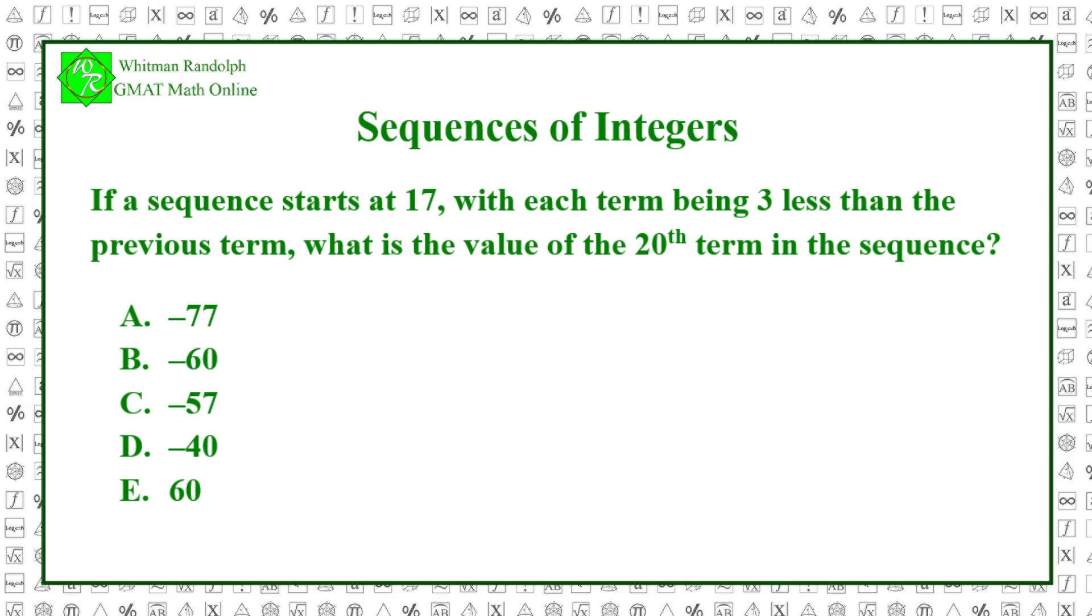Let's find the solution. Since we start at 17, the first term is 17. The second term is 3 less, so it's 14, and the third term is 11. 17, 14, 11, and so forth.